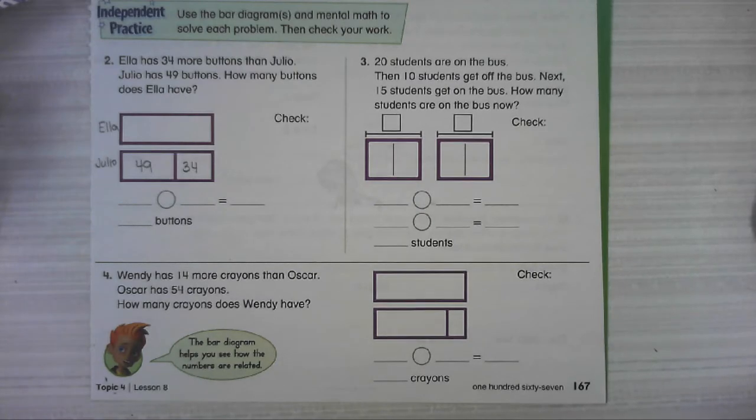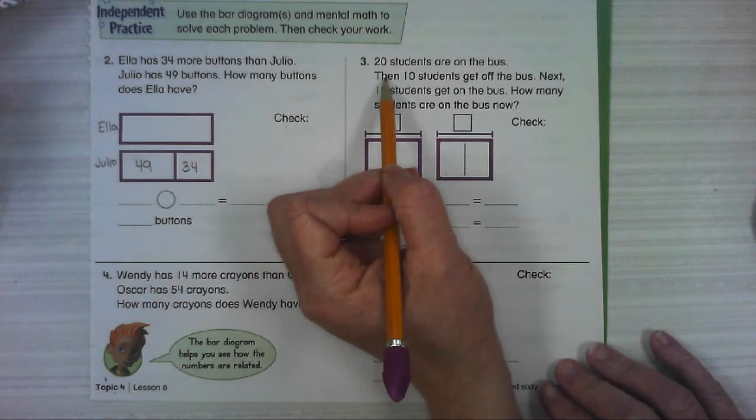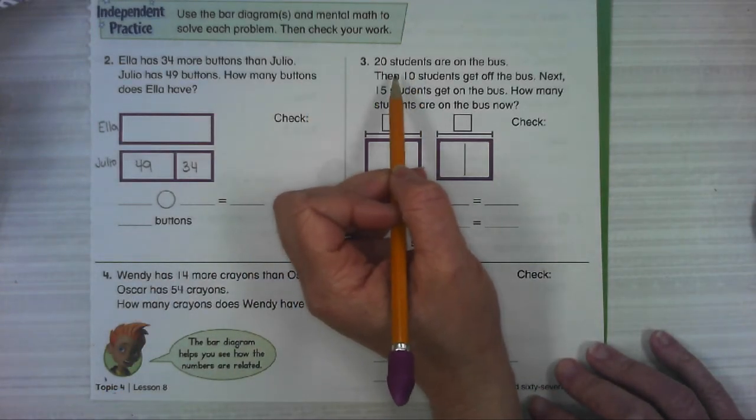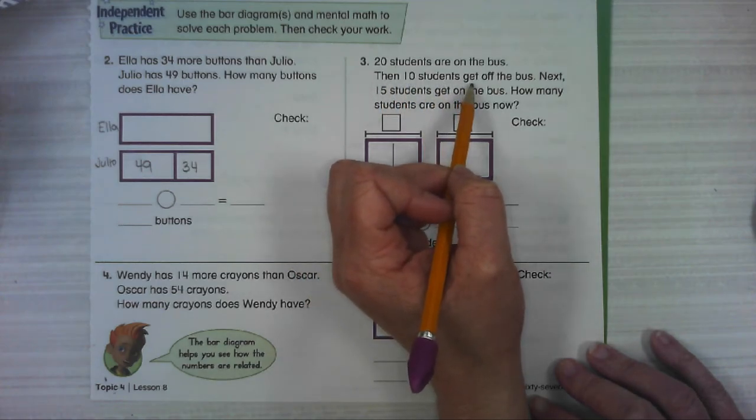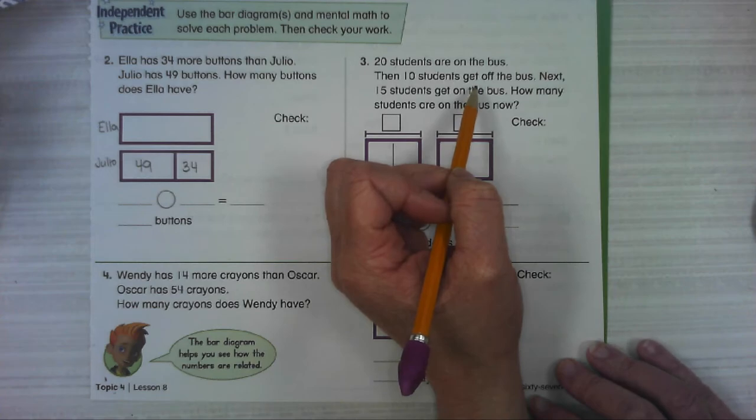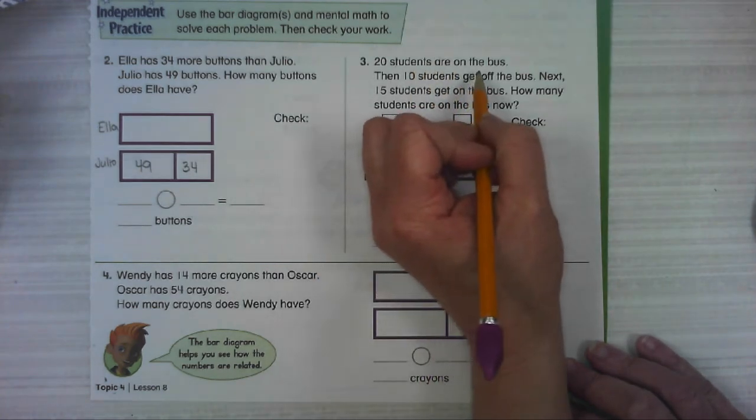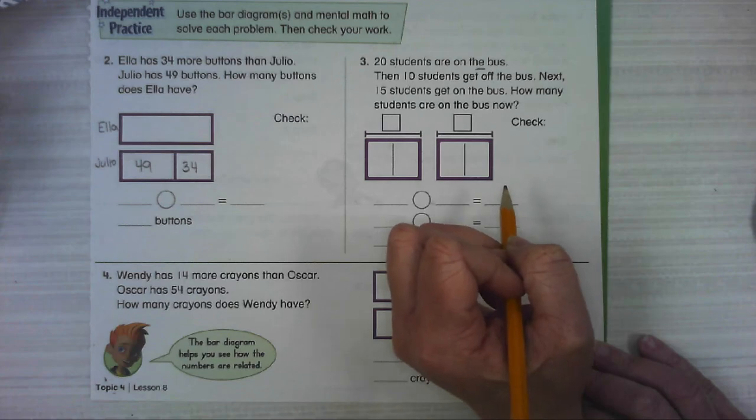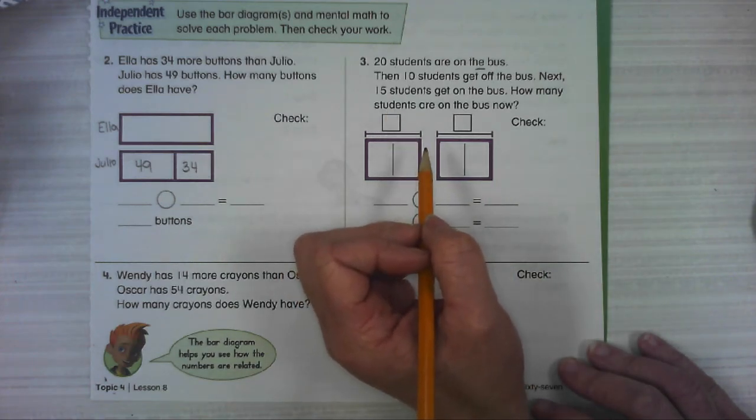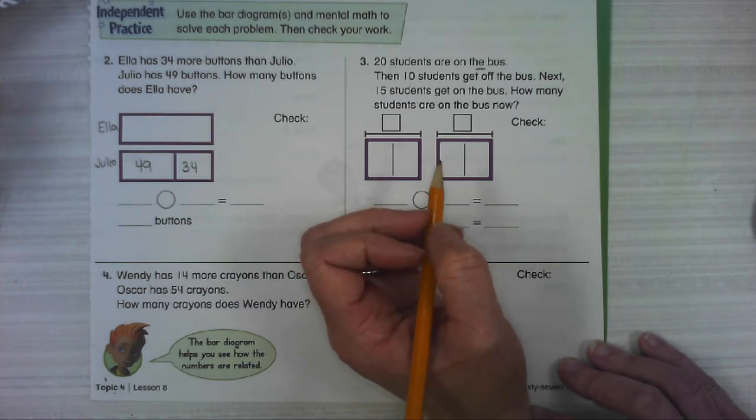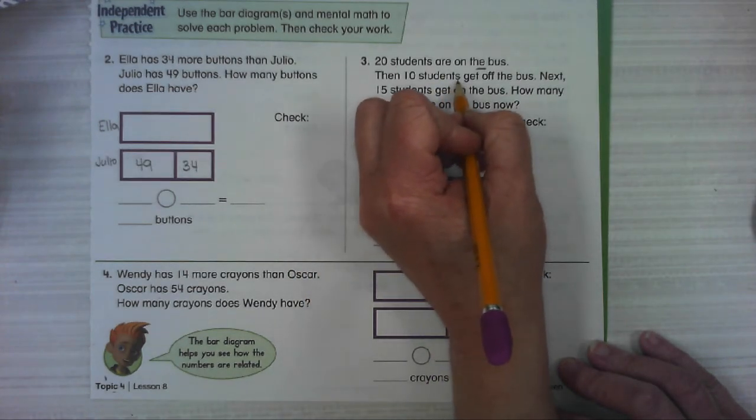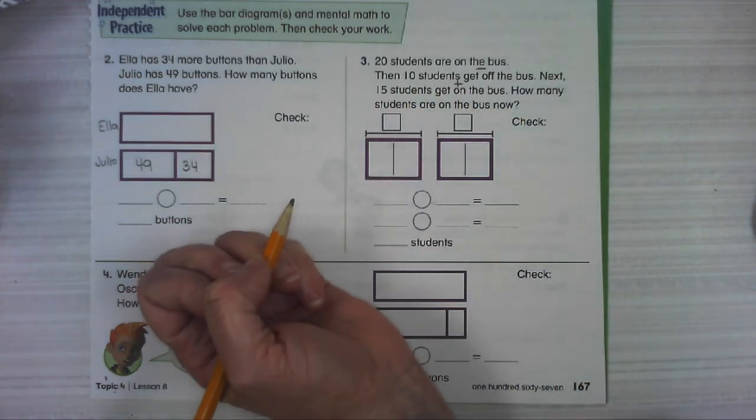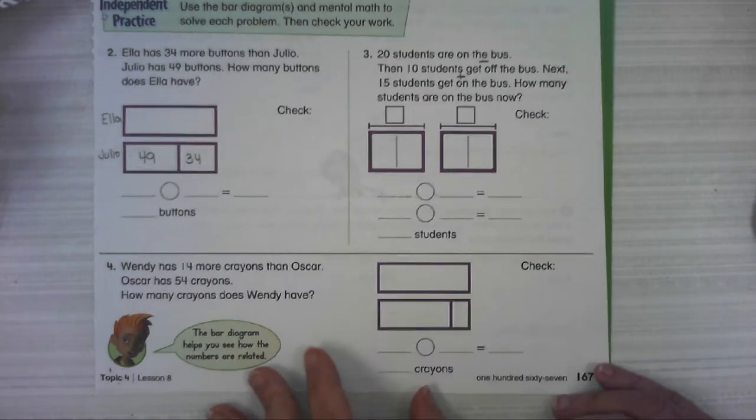Number three. 20 students are on the bus. Then 10 students get off the bus. Next, 15 students get on the bus. How many students are on the bus now? So 20 students are on the bus. That's what you're starting with. Then 10 students get off the bus. Are we adding those students? Are we subtracting them? We're subtracting them because they're leaving the bus. Next, 15 students get on the bus. So now the bus is getting more. So we're going to add those 15 students. Now how many are on the bus?